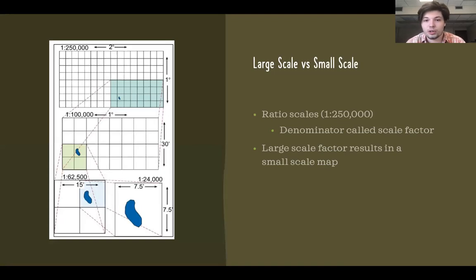Quickly, we're going to think about large scale versus small scale maps. This is another important concept from this lab. We'll talk mostly in terms of ratio scales. If we think back to that ratio scale of 1 to 250,000, the denominator there, or 250,000, is called the scale factor. And with maps, large scale factors result in small scale maps. You can see how that plays out in this image over here to the left.